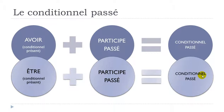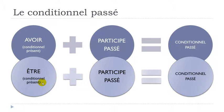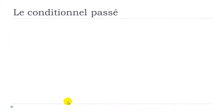Remember that in most cases you will use avoir. If you're not sure, use avoir. If you know a verb requires être, then use être. In both cases, the auxiliary must be conjugated at the conditionnel présent. Let's look at the verbs that require être.